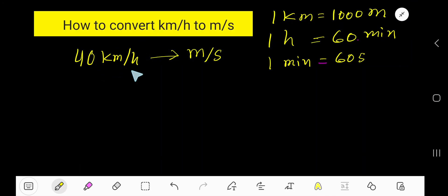How to convert 40 km per hour to meter per second? 40 km per hour.